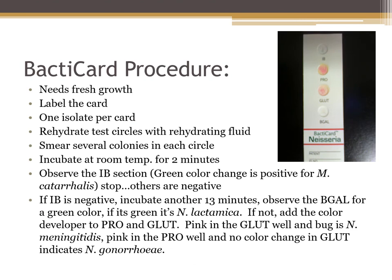Here's a picture of the Bactocard — this is a pretty easy test that takes about 15 minutes. You get the four test circles damp with rehydration fluid from the kit, then smash your unknown organism into the IB well, the PRO well, the GLUT well, and the BGAL well, and wait two minutes. At two minutes, look at the IB well for a bluish-green color — if positive, call it Moraxella catarrhalis. If not, wait an additional 13 minutes and look at the BGAL well: bluish-green means Neisseria lactamica. If not, add a color reagent to the PRO and GLUT wells — positive GLUT indicates Neisseria meningitidis, while positive PRO and GLUT indicates Neisseria gonorrhoeae.